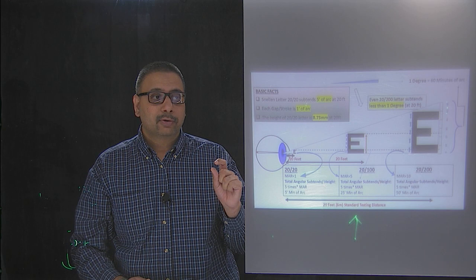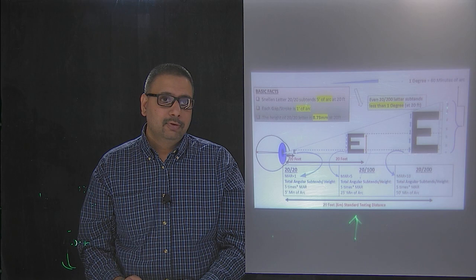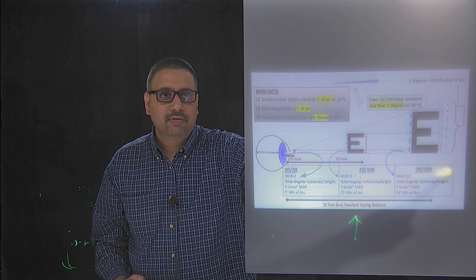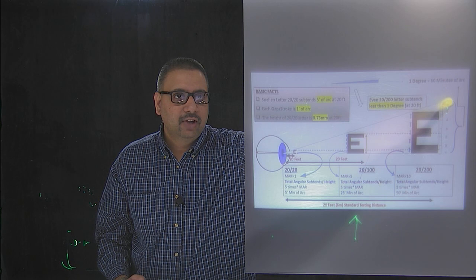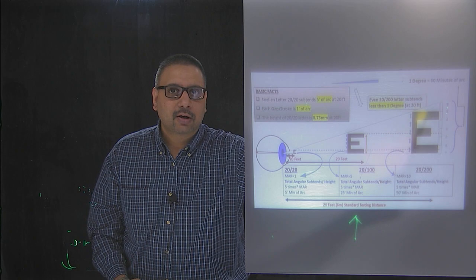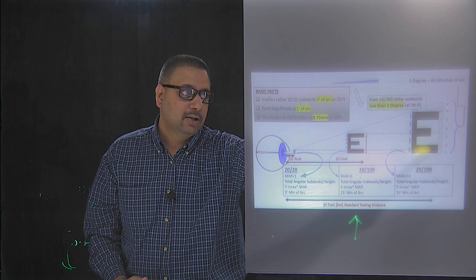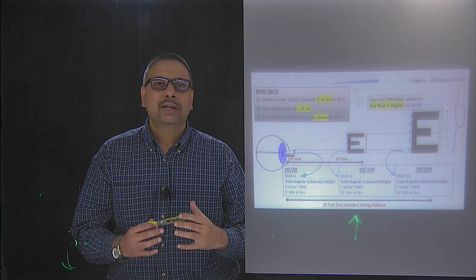The tiniest letter on the extreme left is essentially a 20/20 letter. Even a 20/200 letter subtends only 50 minutes of arc, because each stroke or gap in a 20/200 letter is about 10 minutes of arc, and you have five of them — so the whole letter is 50 minutes of arc. This means even a 20/200 letter is less than one degree — it's really tiny.